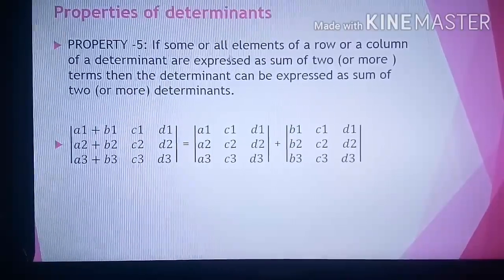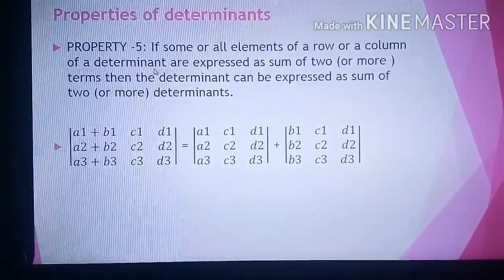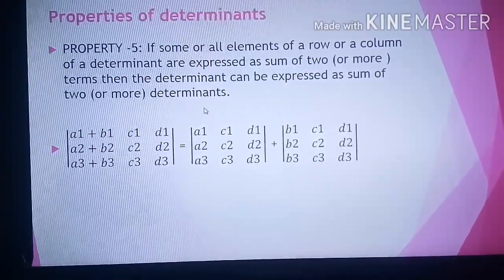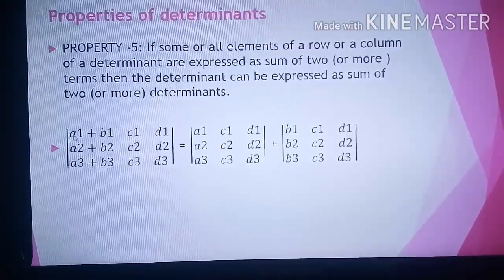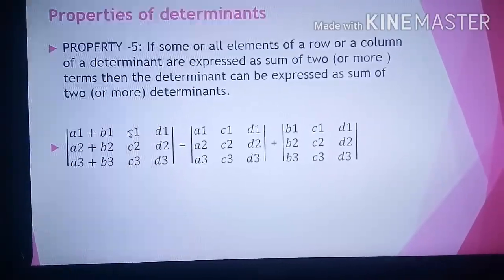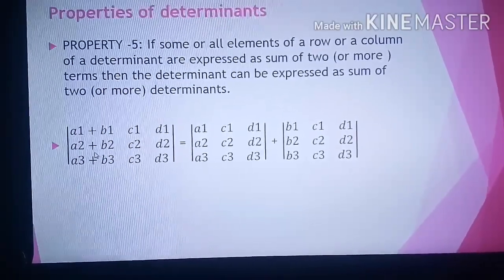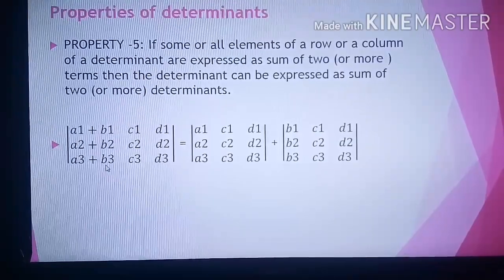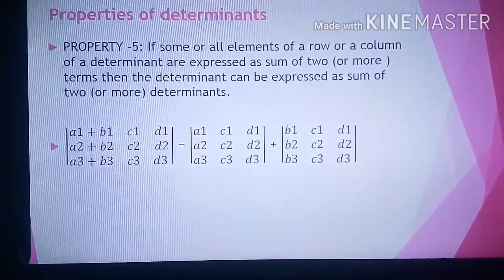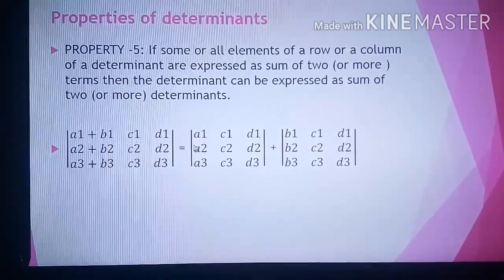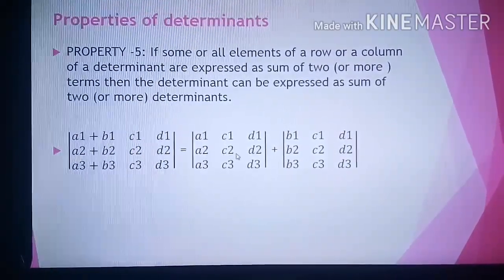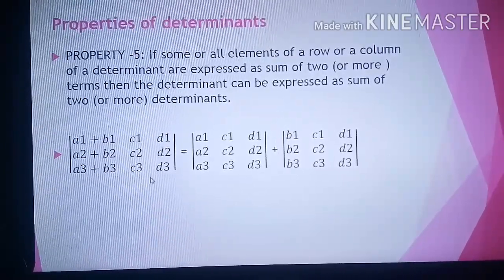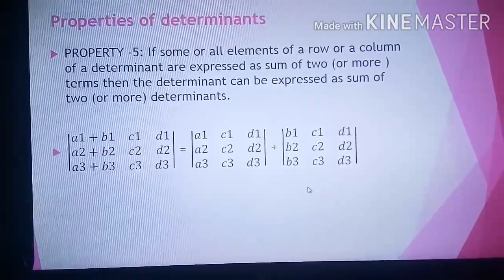Property 5: if all elements of a row or column of a determinant are expressed as the sum of two or more terms, then the determinant can be expressed as the sum of two or more determinants. That means if the first column elements are a1 plus b1, a2 plus b2, a3 plus b3 with second and third columns c1, d1; c2, d2; c3, d3, we can split it into two determinants: one with first column a1, a2, a3 and one with first column b1, b2, b3.